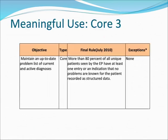Meaningful Use Core 3, Final Rule: More than 80% of all unique patients seen by the EP must have at least one entry, or an indication that no problems are known for the patient, recorded as structured data. Exception: None.